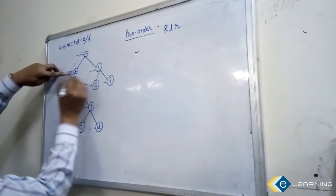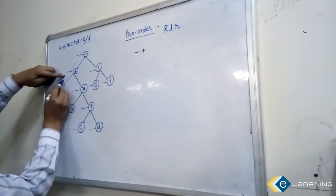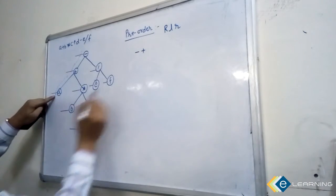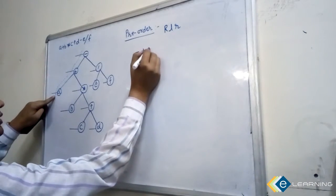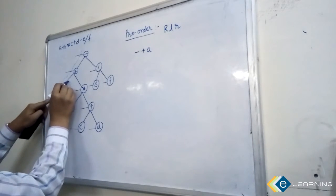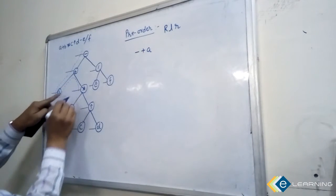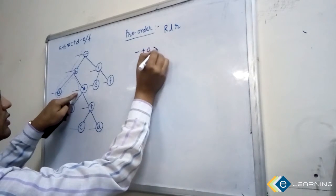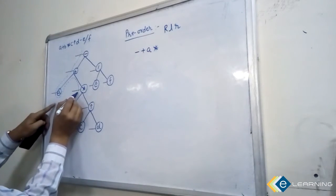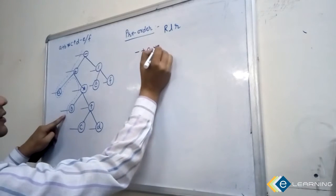Start from here. This line is intersecting — write down minus. Now this mark is intersecting — write star. Now this is B, write A. Go along like this following the traversal path.